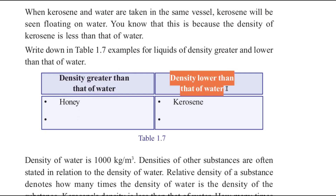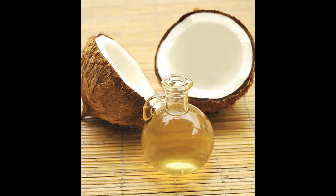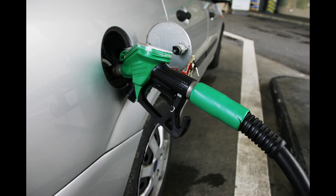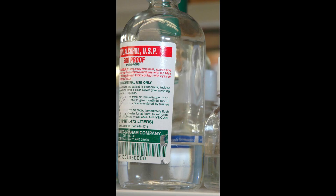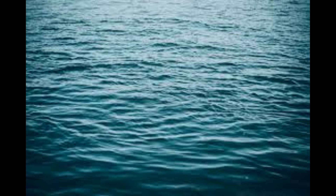For liquids having density lower than that of water, kerosene is given as one example. You can also write coconut oil, petrol, and spirit. All these liquids have lower density than water. Let us now study more about the density of water and other substances.